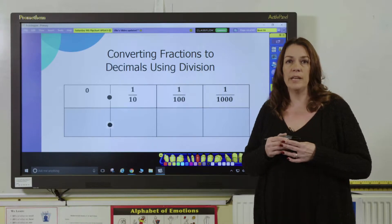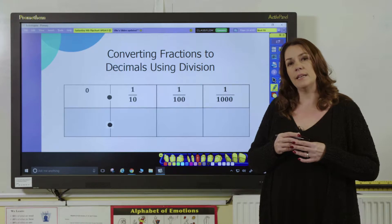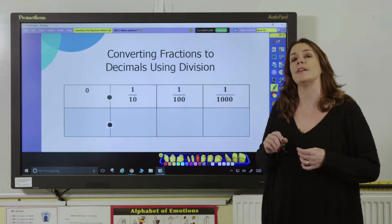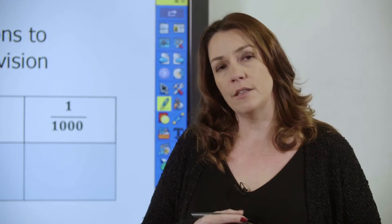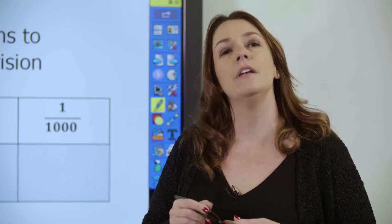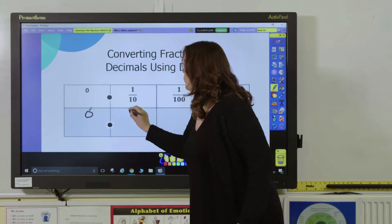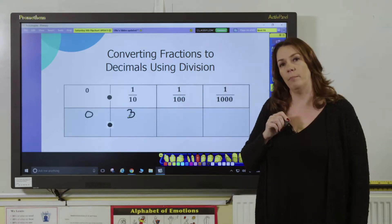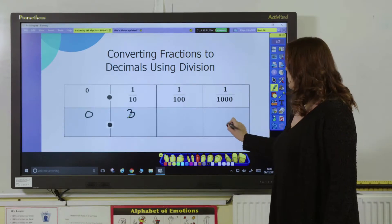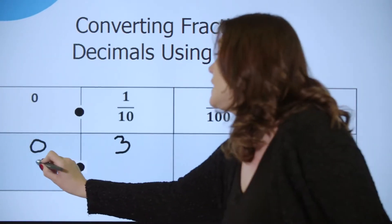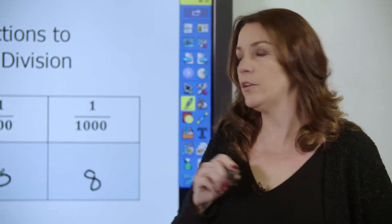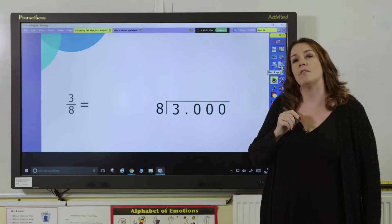To convert a fraction into a decimal you simply need to divide the numerator by the denominator. Let's have a look at using a fraction where the denominator is a tenth, a hundred or a thousandth — that's a really good place to start. If we take the fraction three-tenths, for example, we need to divide three by ten, and pupils will have their knowledge of place value knowing that the answer would be 0.3 as the three goes in the tenths column. Similarly, if we had a fraction such as eight-thousandths, they would use their knowledge of place value to know that the eight would go in the thousandths column, giving us a decimal of 0.008.